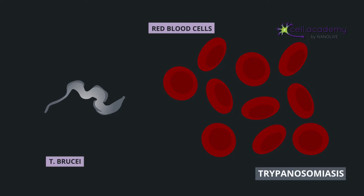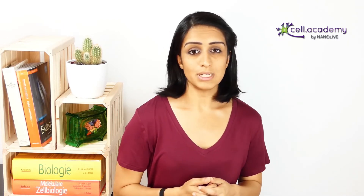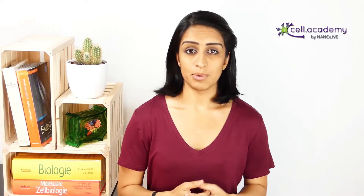In this process, the parasite produces vesicles containing virulence factors that fuse with human red blood cells, causing membrane alterations, leading to anemia-like symptoms. In advanced stages, the disease attacks the central nervous system, and if not treated, it can be fatal.